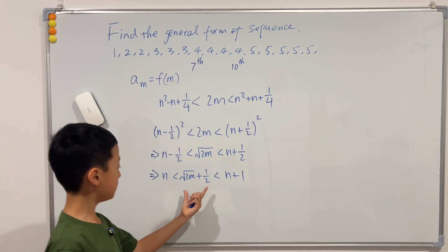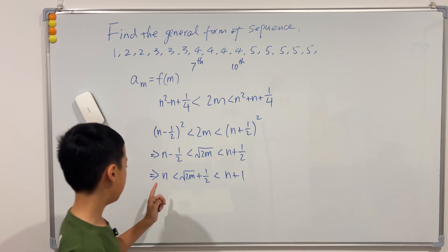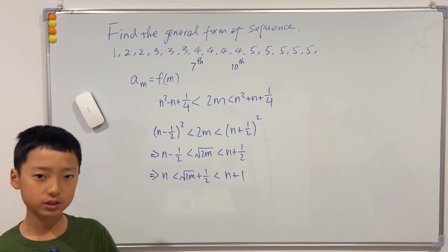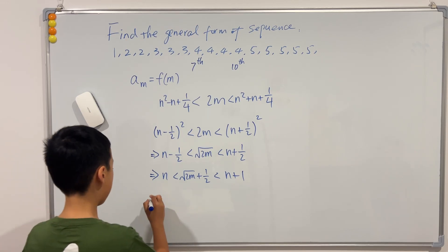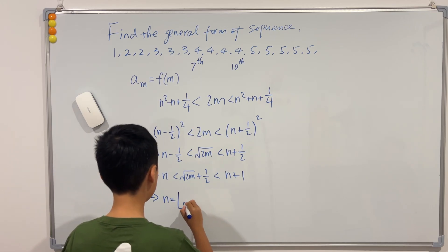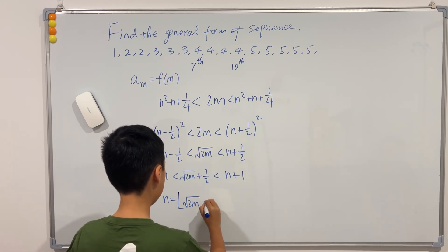And now that this middle number is enclosed between an integer and an integer plus one, what does this mean? It means that n can actually be written as the floor function of the middle number.